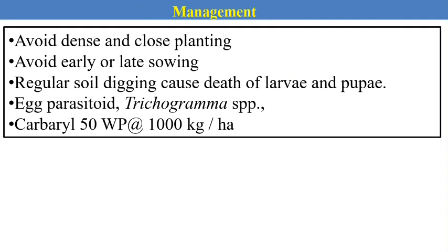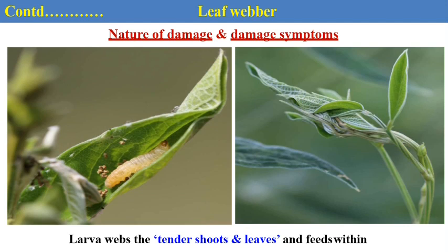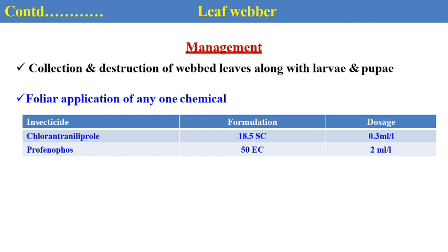For chemical control of the blue butterfly, we can spray with chlorantraniliprole, spinosad, thiodicarb or emamectin benzoate. The next is the leaf weaver, which is also a minor pest — the name itself indicates that the caterpillar of this pest weaves the leaves and feeds inside. The larva weaves tender shoots and leaves and feeds within the concealed condition. For management, we can spray the crop with chlorantraniliprole and profenofos, which are effective chemicals.